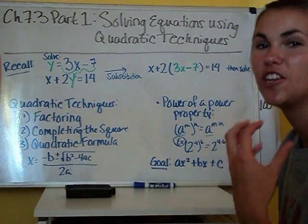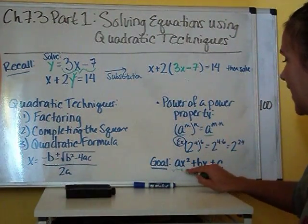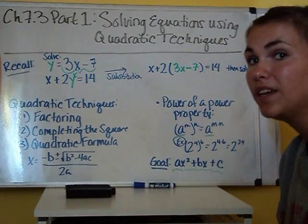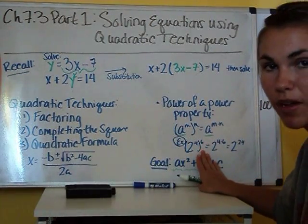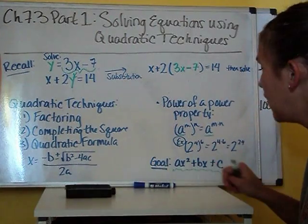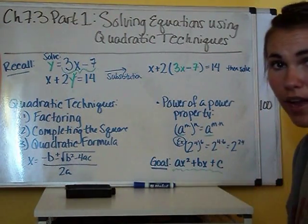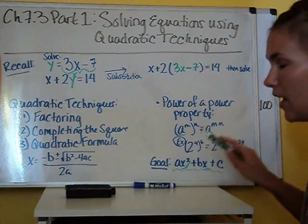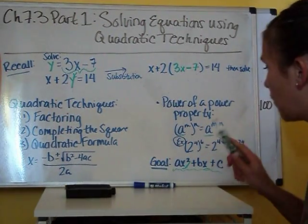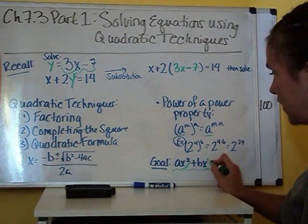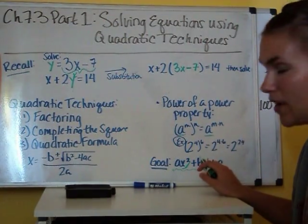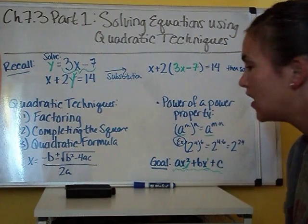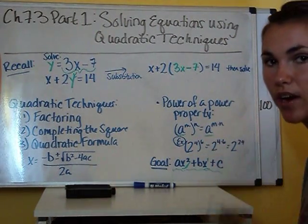Last but not least, if we're going to solve using quadratic techniques, we need to know our goal. Our goal is to get it in the form AX squared plus BX plus C. There might be instances where B equals 0, so you just have AX squared plus C, or sometimes you might not have the C term. Our goal is to get it into this X squared form where this X has an exponent of 1, and the exponent on the squared term has to be half of that.